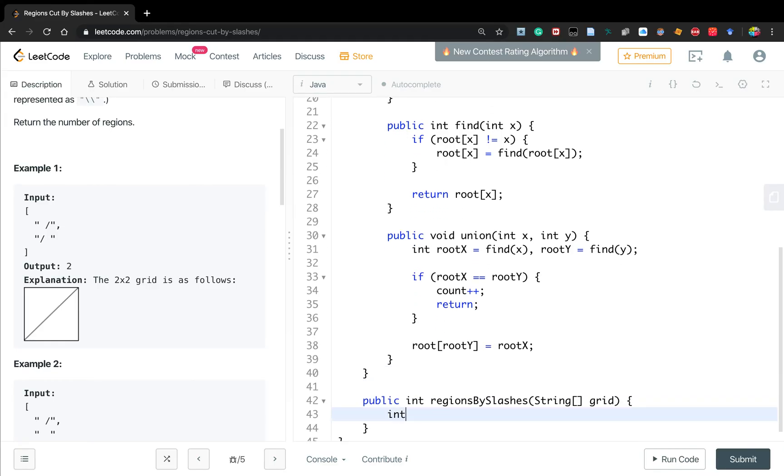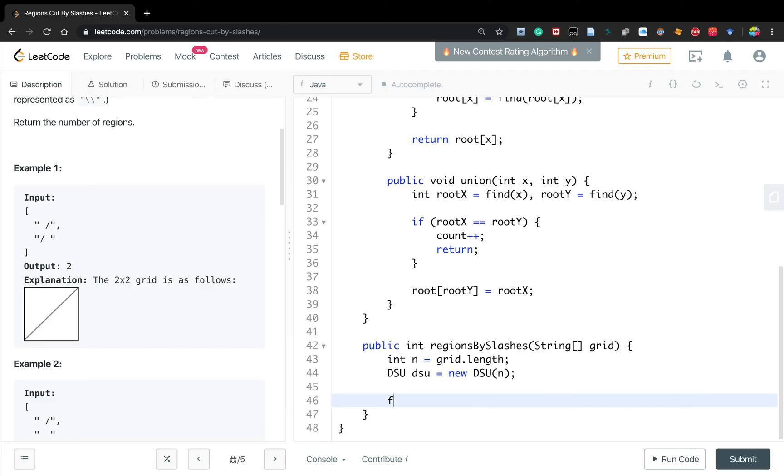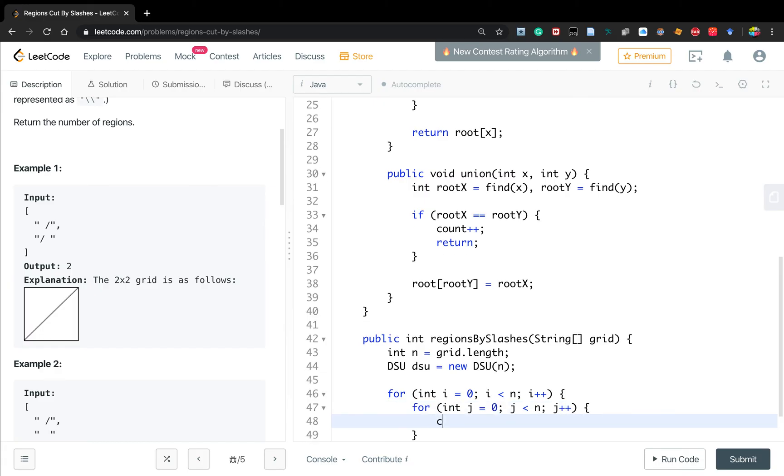Now let's write this part. n equal to grid dot length. We need a disjoint set dsu, new dsu, pass n. Then we iterate every character. For int i equal to zero, i less than n, i plus plus. For int j equal to zero, j less than n, j plus plus. So we get a current char, which will be grid i char at j. Two cases.